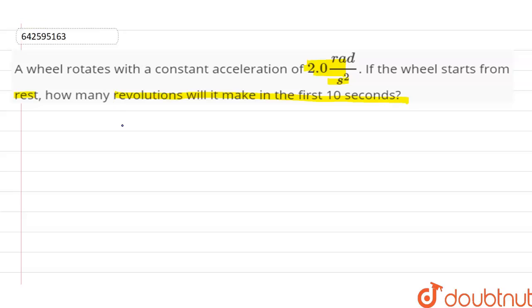So the angular acceleration alpha is constant and is equal to 2 radian per second squared. And its initial angular velocity omega 0 is equal to 0 radian per second.